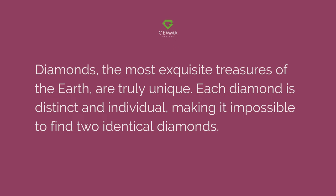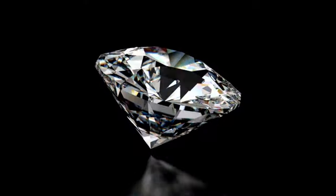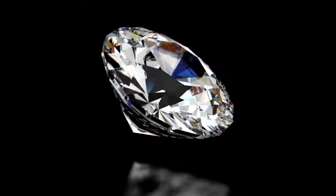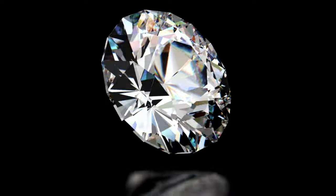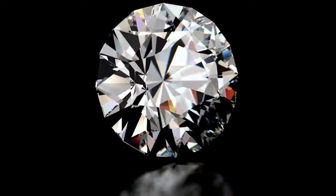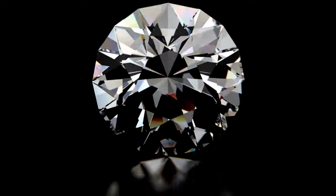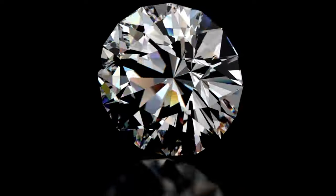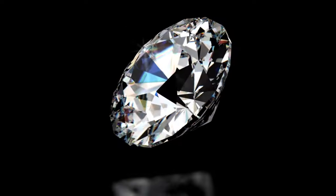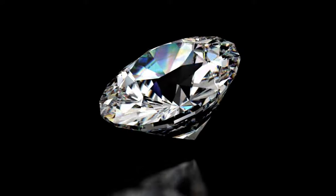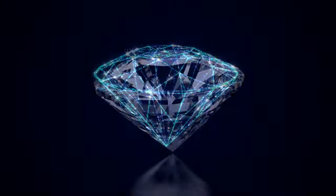The Diamond Types Classification System distinguishes diamonds based on their physical and chemical properties. By examining the atomic composition of a diamond, gemologists can assess its formation, color, and determine whether it is natural, synthetic, or treated.